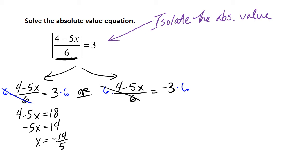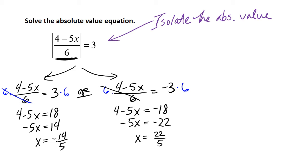On the other side, we multiply both sides by 6, the 6s cancel, giving negative 18 on the right side. We subtract 4, getting negative 22 — since negative 18 minus 4 is a negative number — then divide by negative 5. A negative divided by a negative gives positive 22 fifths. These are left as improper fractions, though you can also write them as mixed numbers: negative 2 and 4 fifths, and 4 and 2 fifths. Both forms are acceptable.